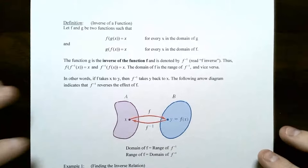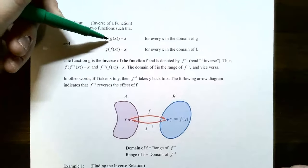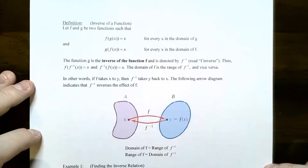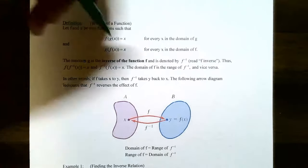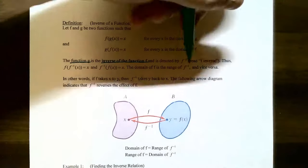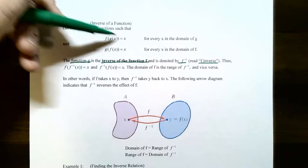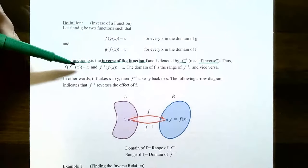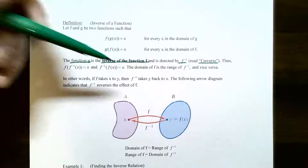Here is the definition of an inverse of a function. You have two functions f of x and g of x that satisfy the property that composites in either order — f of g of x or g of f of x — yield x, for every x in the domain of g and every x in the domain of f. Then these two functions are inverses of each other. The inverse is denoted f inverse, and the conditions become: f of f inverse of x equals x, and f inverse of f of x equals x.